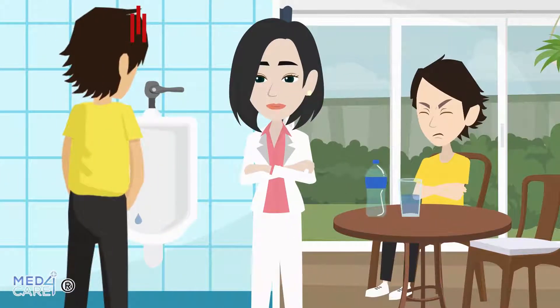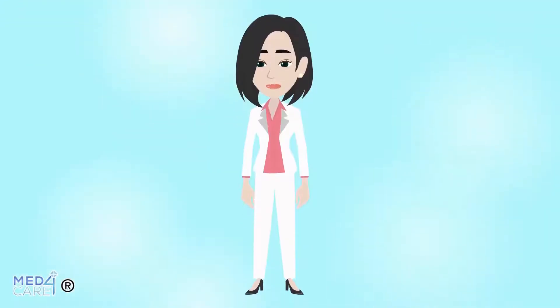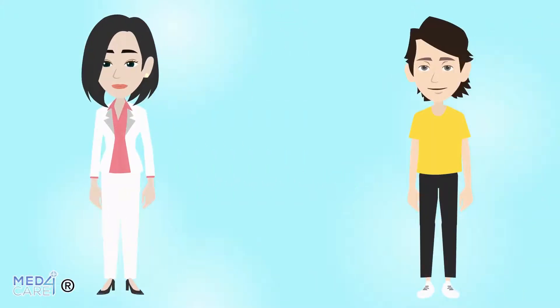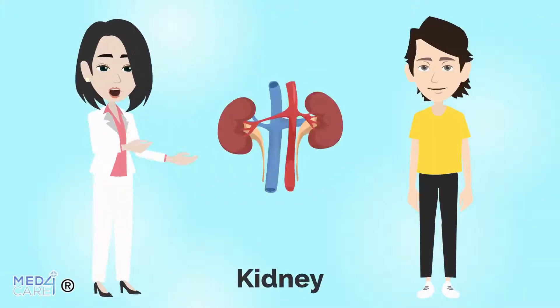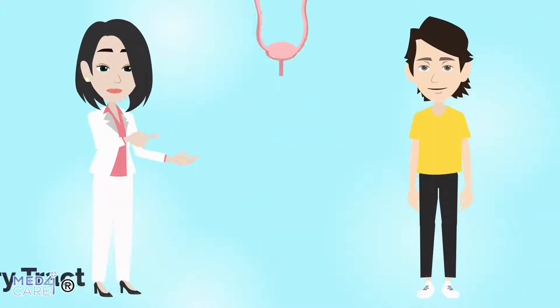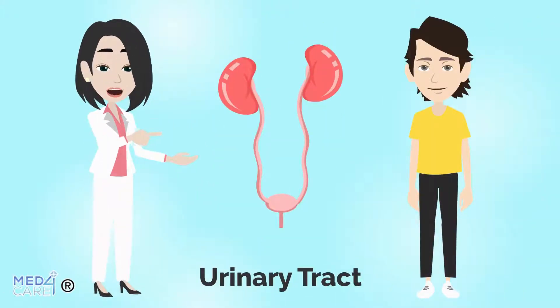In fact, a low intake of fluids for a certain period naturally prompts the body to limit urination as much as possible. In other cases, however, oliguria is secondary to diseases that affect the kidney and urinary tract.